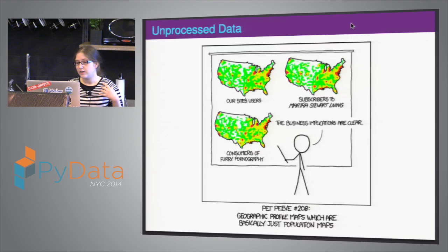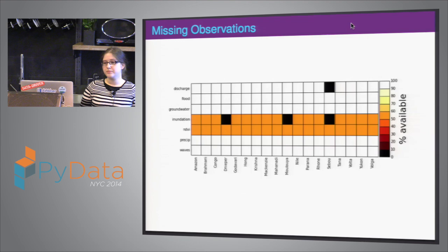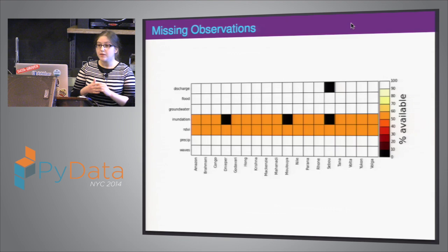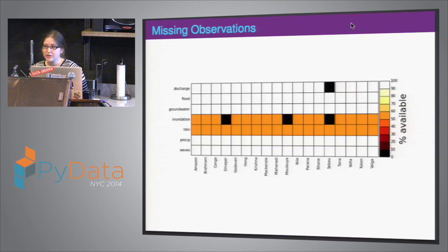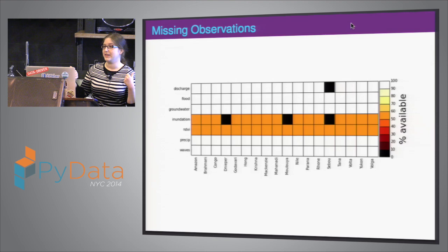Another thing that can happen often is you're missing data. If you're missing like half your data, your algorithms are going to break — and then you might get great results. You know how you get the most fantastic correlations ever? You lose your entire data set, because if you have a correlation of two points to two points, it's going to be like 100.